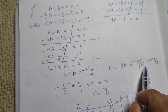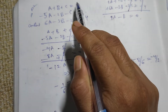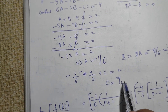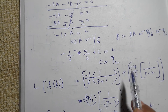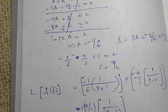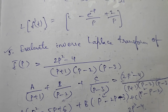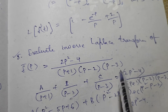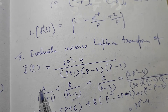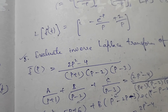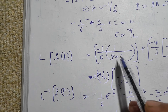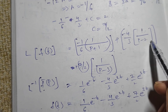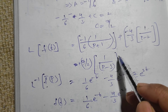Substituting the values of A and B into the first equation A + B + C = 2, we get C = 7/2. Now substituting the values of A, B, and C back into the partial fractions, we get: (-1/6)·1/(p+1) + (-4/3)·1/(p-2) + (7/2)·1/(p-3).